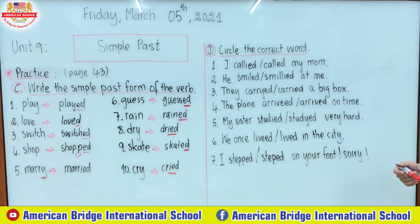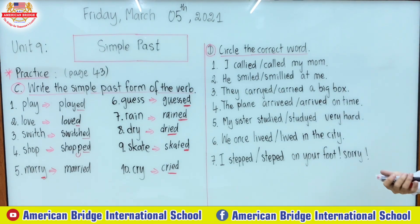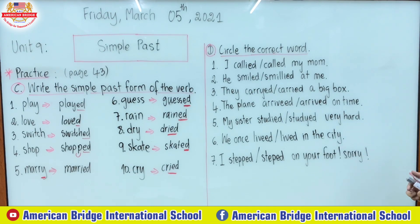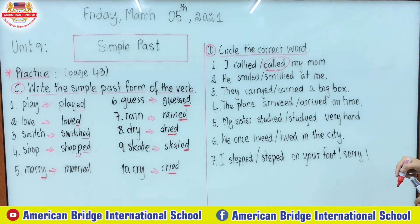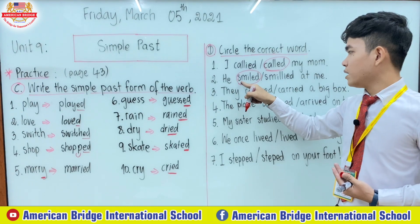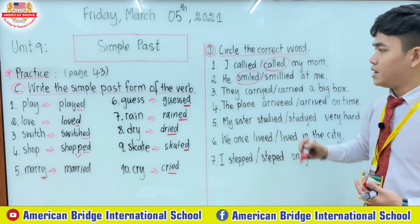Now we are on Part D: circle the correct word. We are going to circle the correct answer. Number one: 'I call' or 'I called my mom' — the second one is correct, so we circle the verb 'called' with -ed. Number two: 'He smiled at me' — the verb 'smiled' is correct, because the verb 'smile' is spelled s-m-i-l-e and when changed to the regular simple past you just add only -d: smiled.